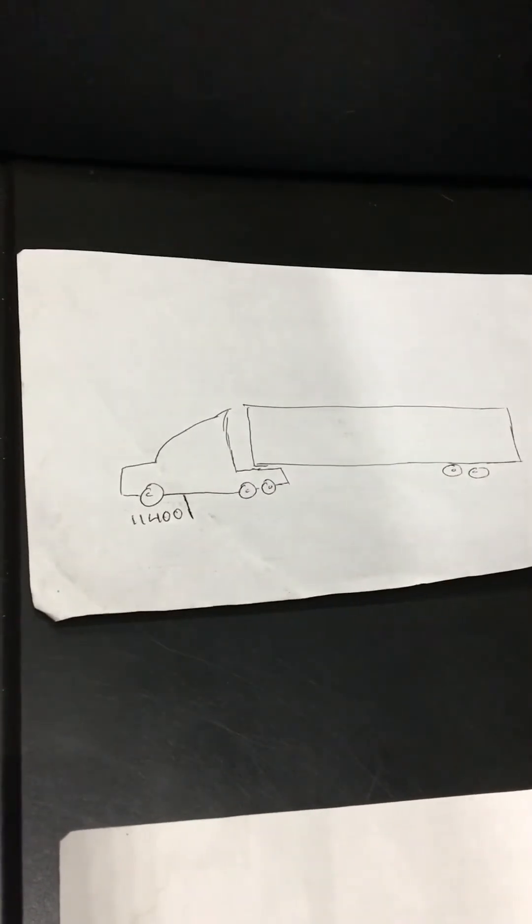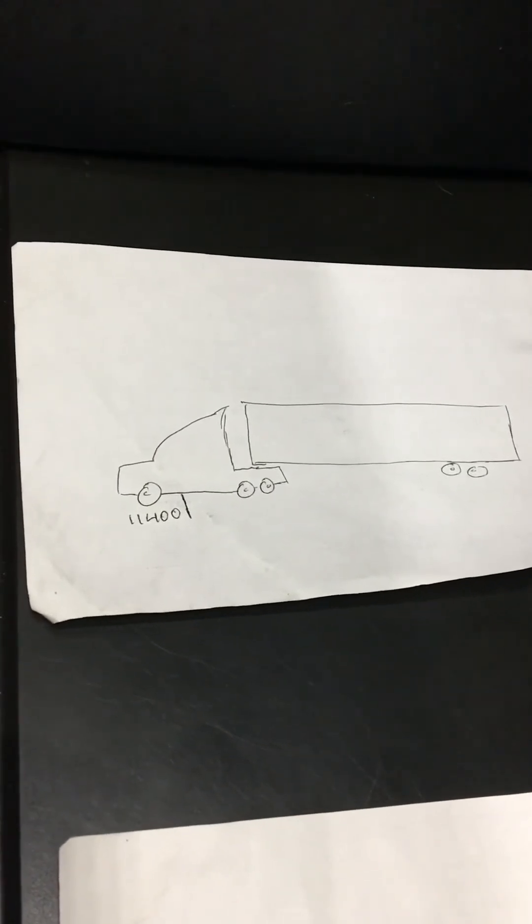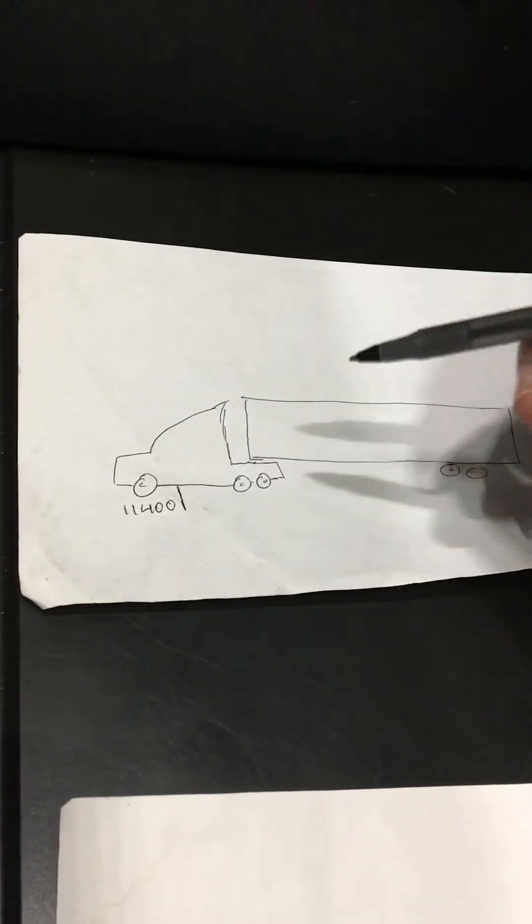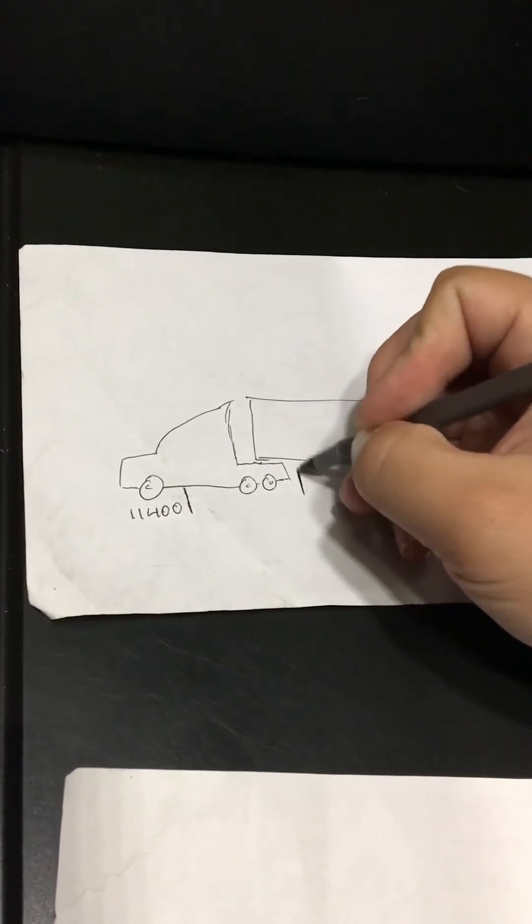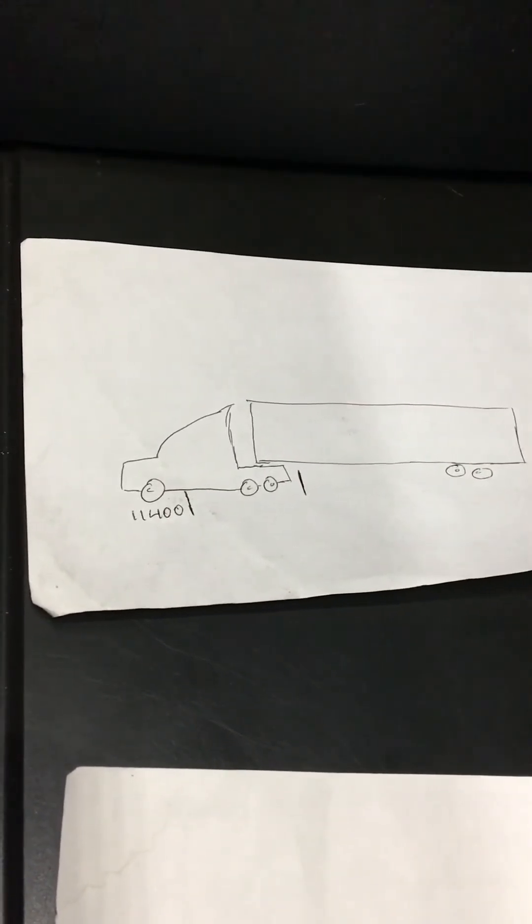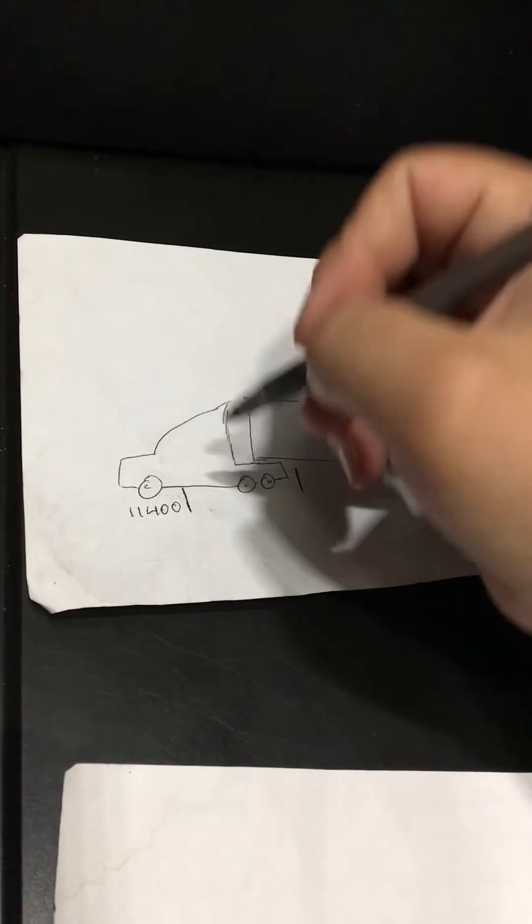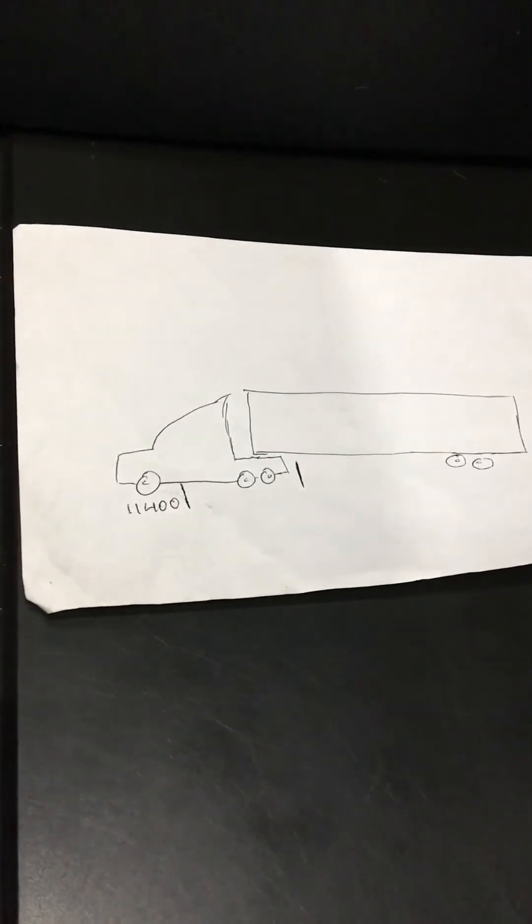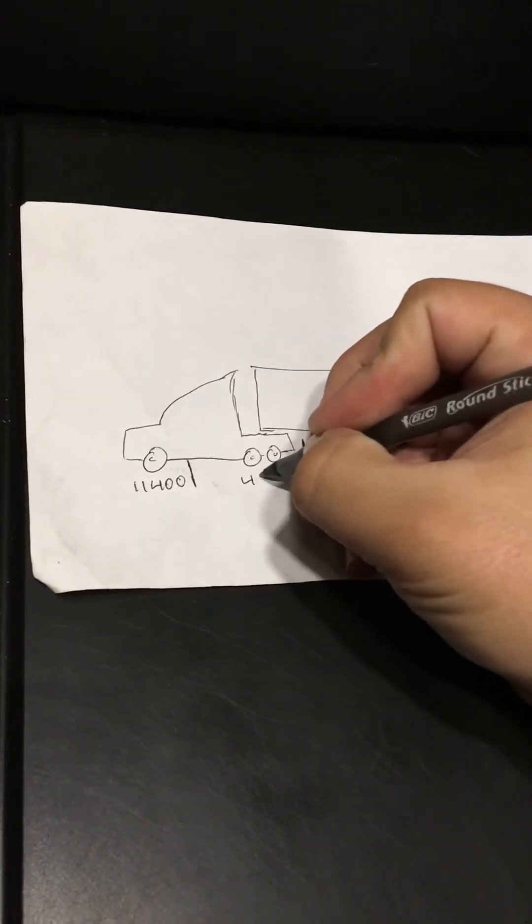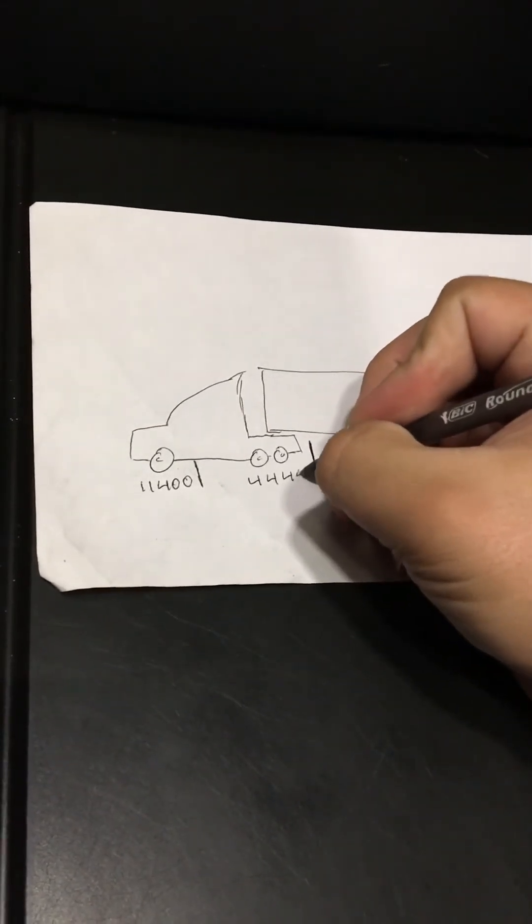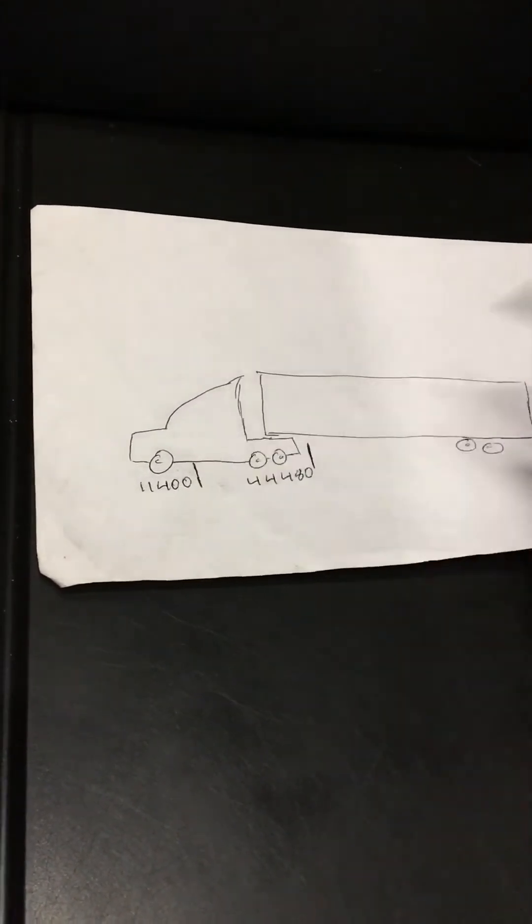Next thing you're going to do is you're going to drive forward further onto the scale and you're going to want to have your drives on the scale. That's going to give you another number. That number for my situation came to 44,480.